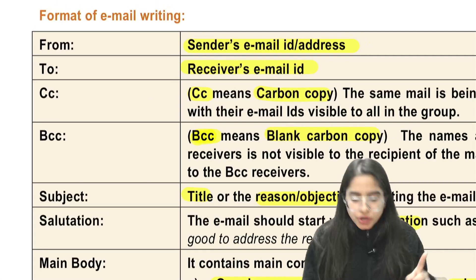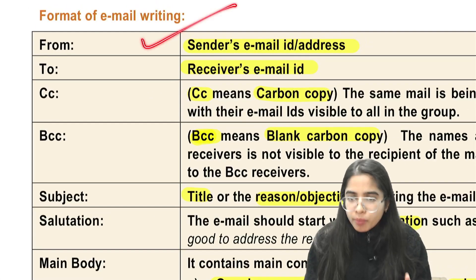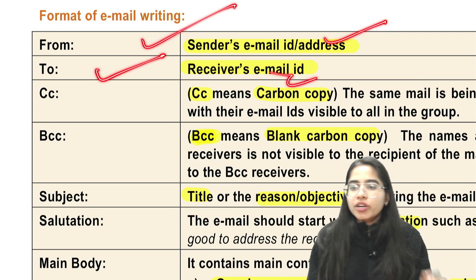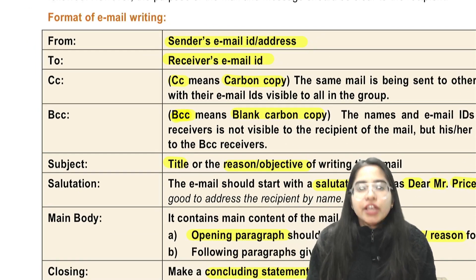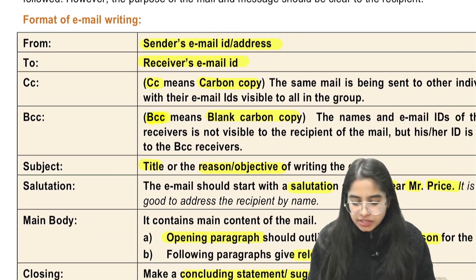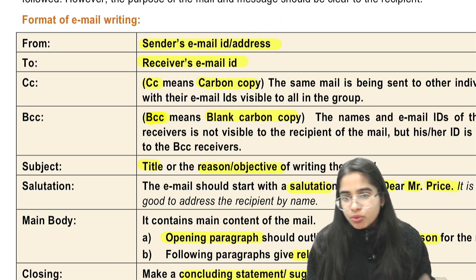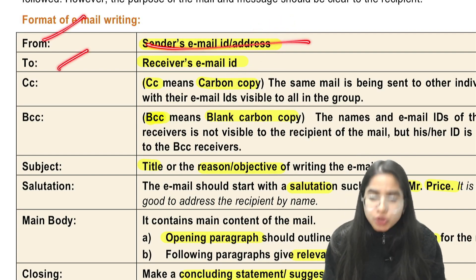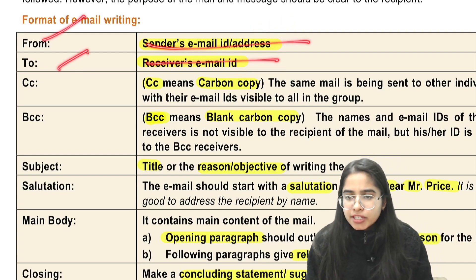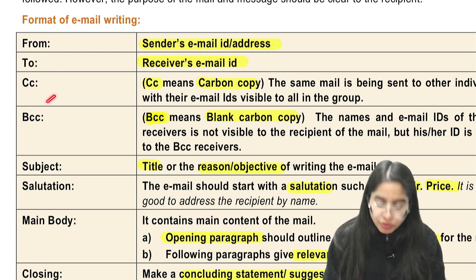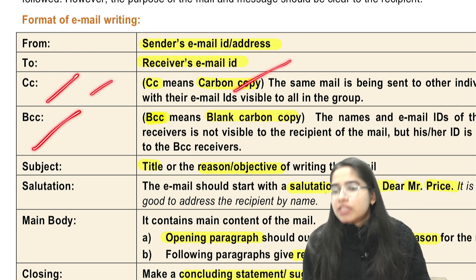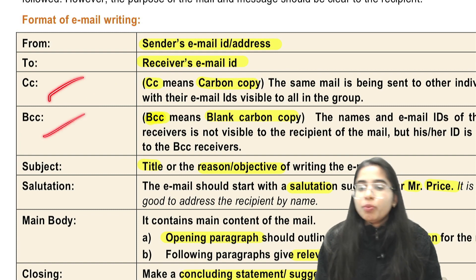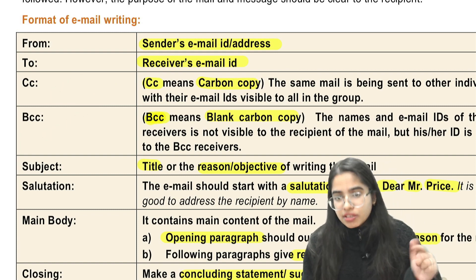What is the format? First, you have to write 'From' — the sender's email ID. Then 'To' — the receiver's email ID. If the sender's and receiver's email IDs are not given in the question, you can just write 'From' and leave a blank space, then 'To' and a blank space. Then you have to write CC and BCC. CC means carbon copy, BCC means blank carbon copy. These two persons also receive the email.